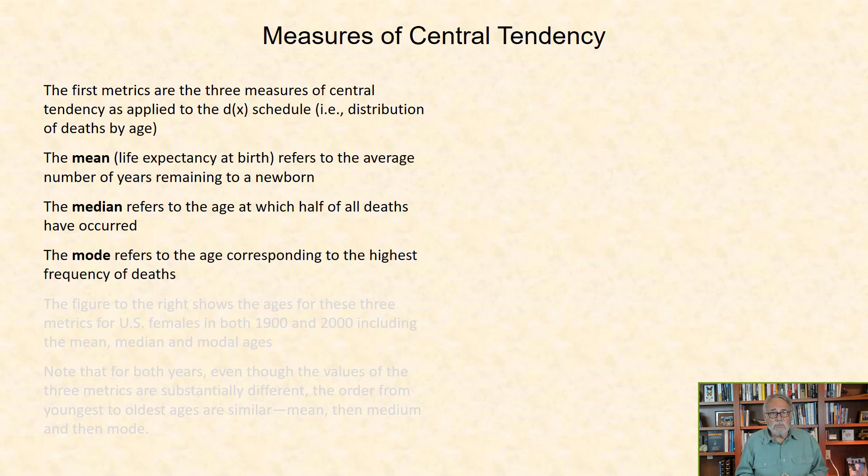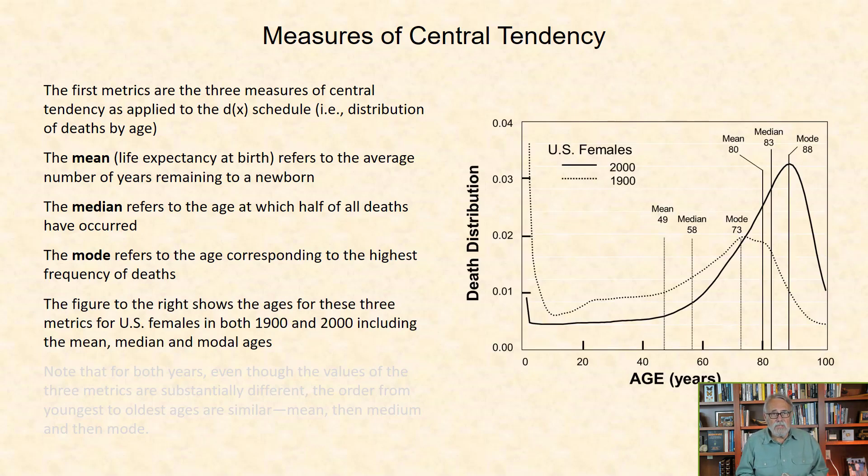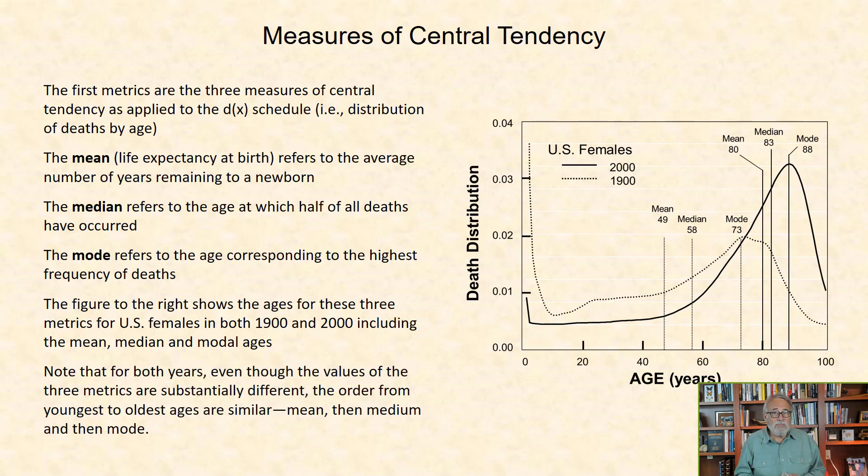And mode refers to the age corresponding to the highest frequency of deaths. The figure to the right shows the ages for the mean, median, and modal ages of deaths for U.S. females in both 1900 and 2000. Note that for both years, even though the values of the three metrics are substantially different, the order from youngest to oldest ages are similar between years: the mean, then the median, and then the mode.